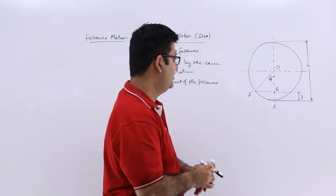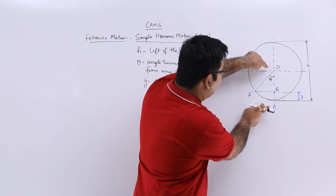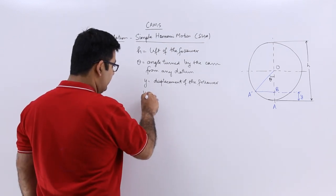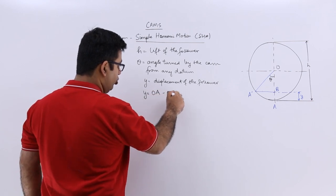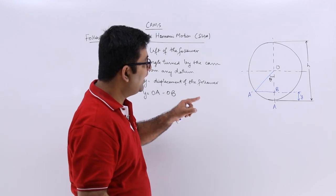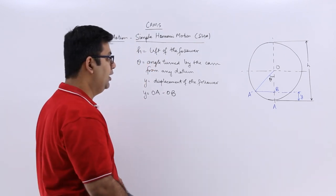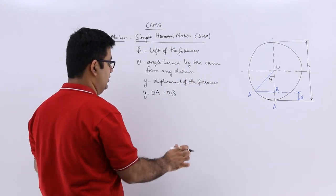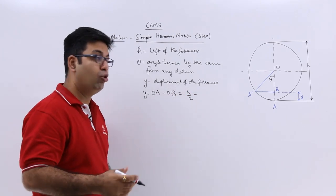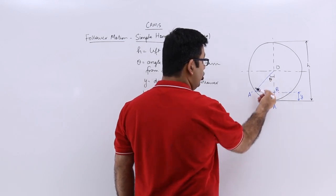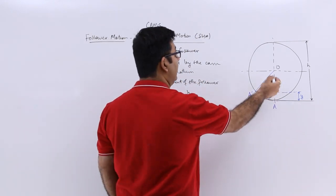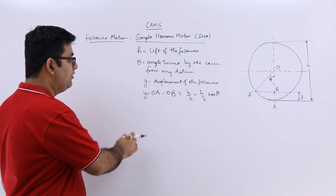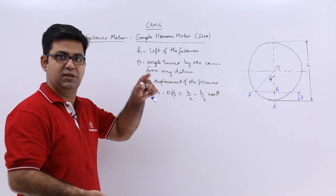If I have to calculate y, it would be OA minus OB. So geometrically, y is equal to OA minus OB. Now OB is OA dash cos of theta. OA is half of the diameter of this circle, which is h. So this will be h by 2 minus OB. OB is the cos component of OA dash. Now OA dash is also equal to OA in length, so this would be h by 2 cos theta. This means y becomes a function of theta, and h is a constant value.